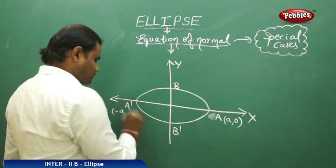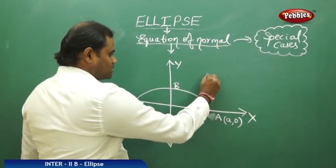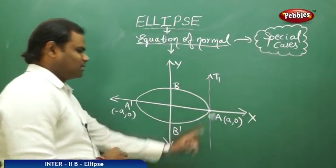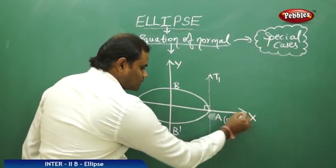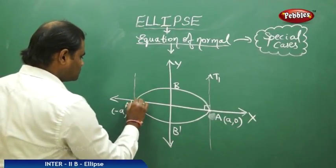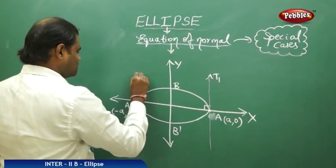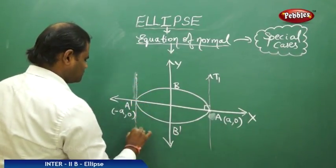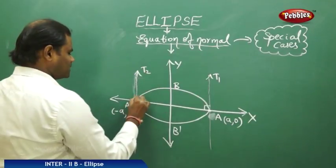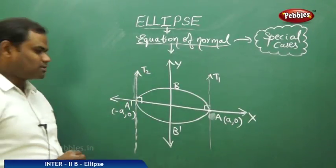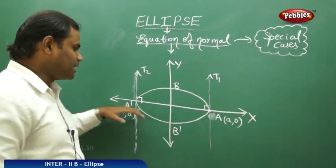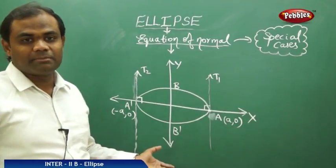So let's draw a tangent at a, that is at (a, 0). Clearly the tangent here, say this is t1, is perpendicular to the x-axis. Similarly, a tangent drawn at a dash is also perpendicular to the x-axis. This makes us understand that the line perpendicular to tangents t1 and t2 and passing through a and a dash is nothing but the x-axis.